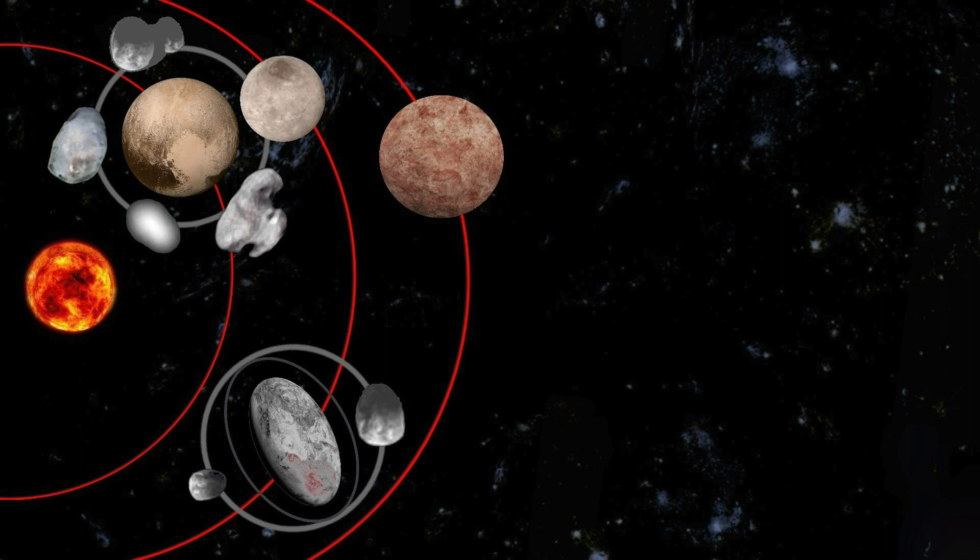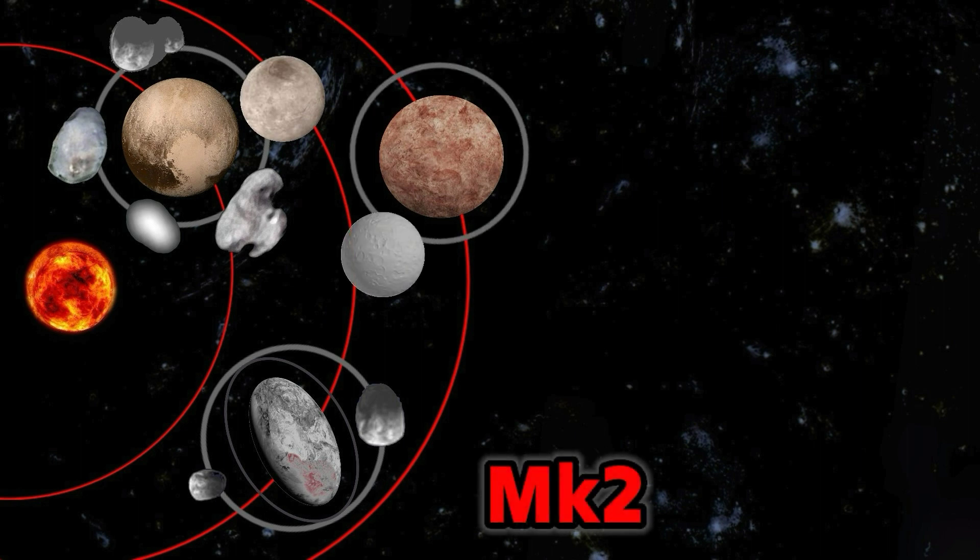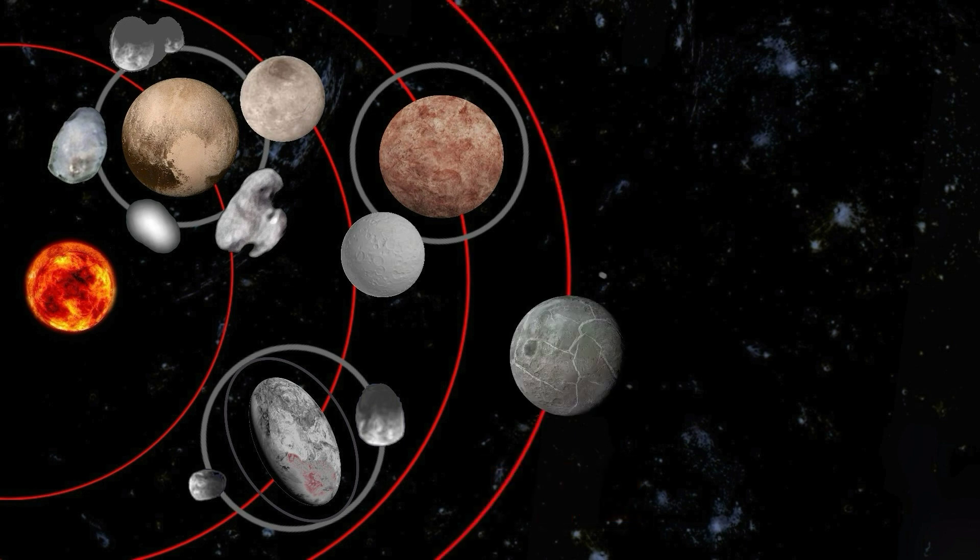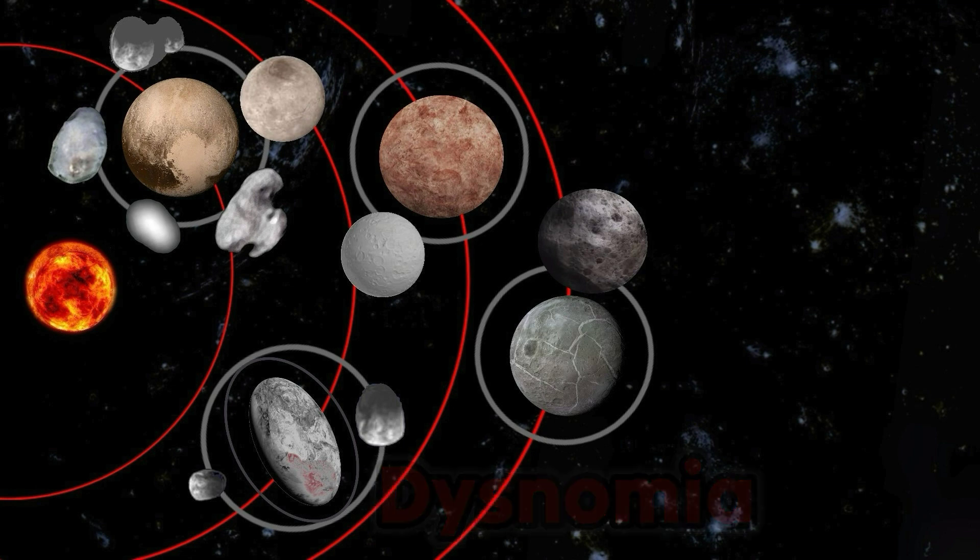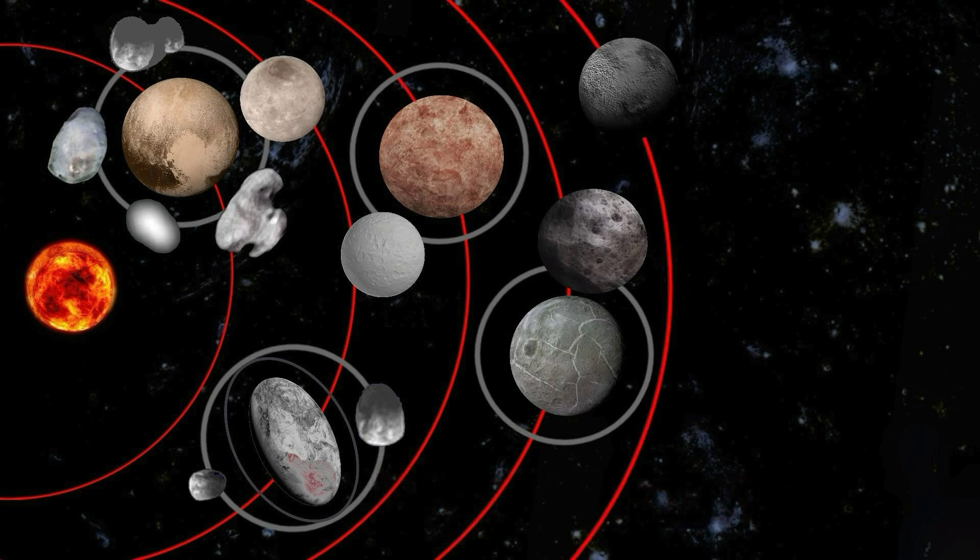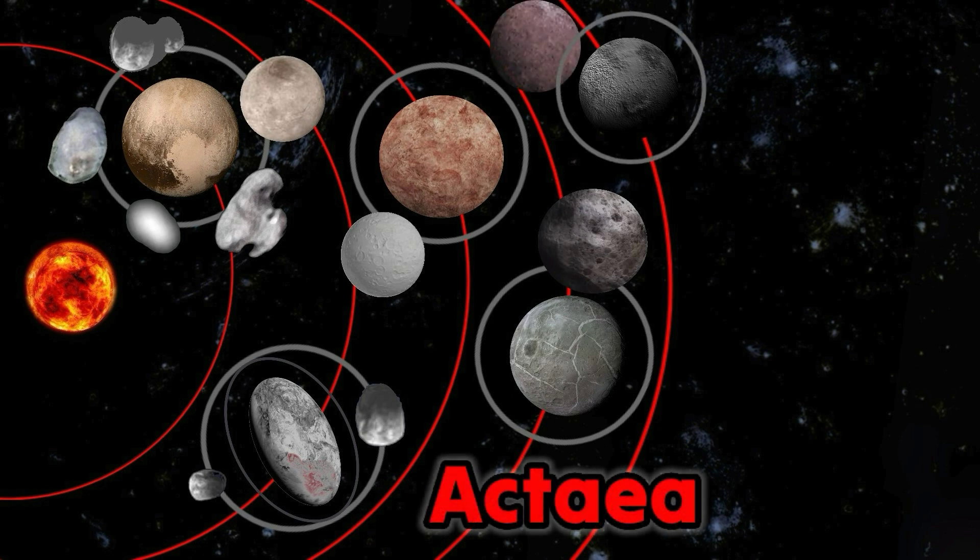Makemake has 1 moon: MK2. Eris has 1 moon: Dysnomia. Salacia has 1 moon: Actaea.